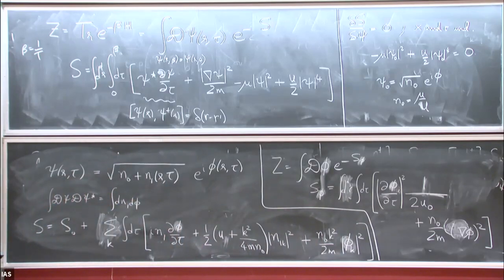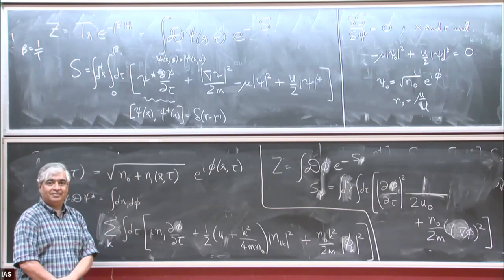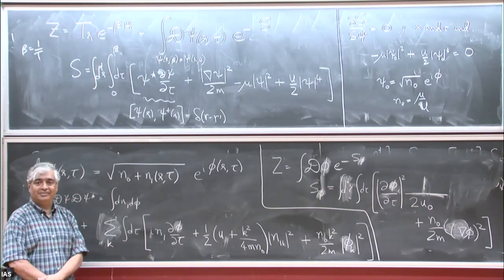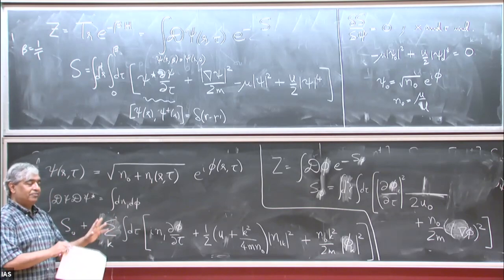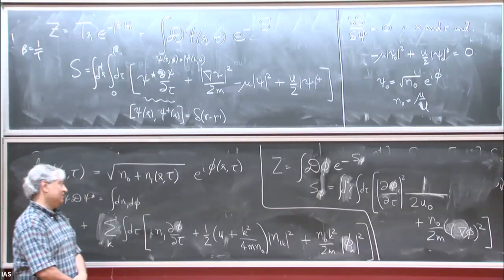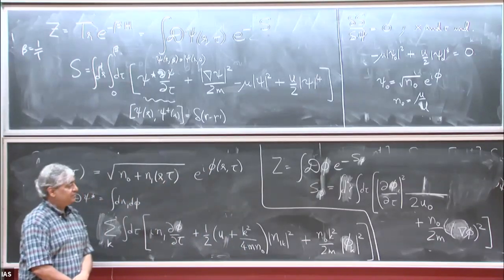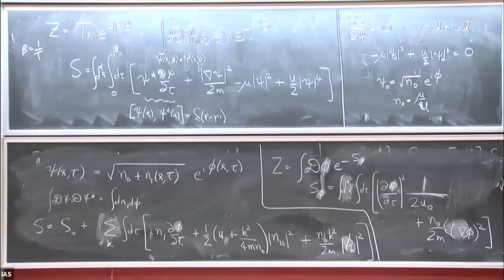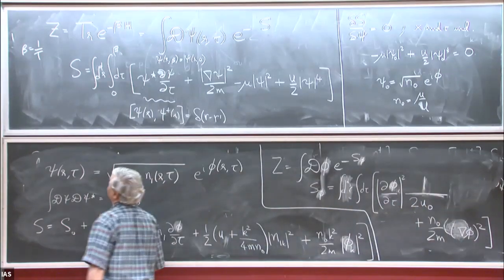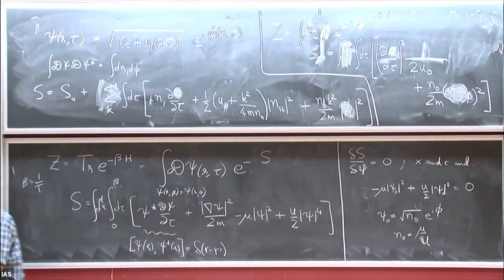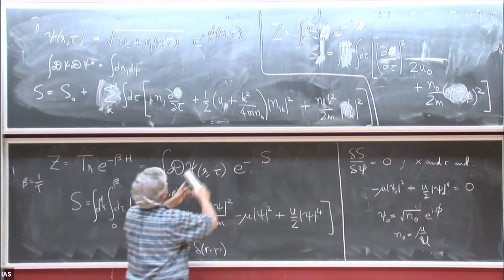So we started with the non-relativistic Bose gas, condensed particles in the ground state, integrated out the density fluctuations, and got the theory of a linearly-dispersing sound mode. This mode can be observed experimentally — you can actually see pressure waves. The experiments are similar to experiments you do to detect sound, but these occur in a different frequency and momentum range than first sound, which occurs at much longer wavelengths at finite temperature. At zero temperature, this is the pure infinitely long-lived mode; this is all there is.